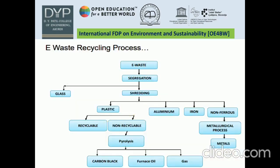E-waste recycling process: E-waste is first collected, then undergoes segregation, crushing, grinding, and pulverization. This is followed by the separation of glass, plastic, ferrous, and non-ferrous metals. This is the e-waste recycling process overview.